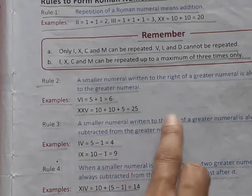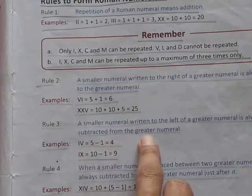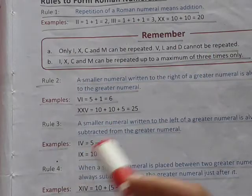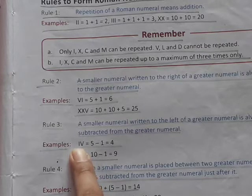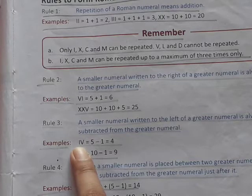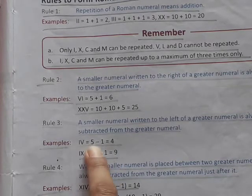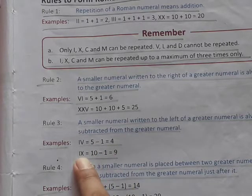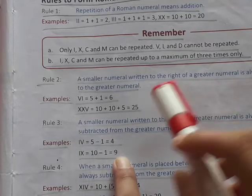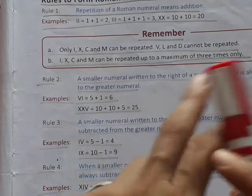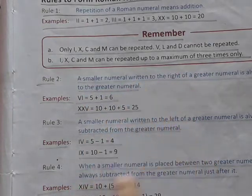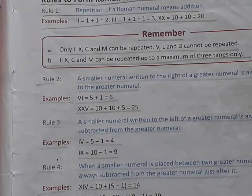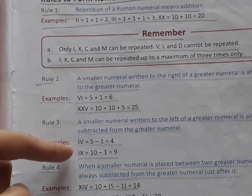The third rule is: a smaller numeral written to the left of a greater numeral is always subtracted from the greater numeral. For example, IV — I is 1 and V is 5, so 5 minus 1 equals 4. Another example: IX — I is 1 and X is 10, so 10 minus 1 equals 9. So remember: smaller numeral on the right means addition; smaller numeral on the left means subtraction.